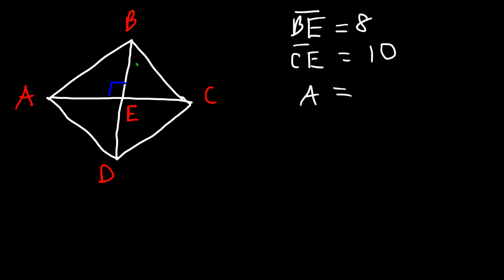How can we calculate the area? You need to know that the diagonals of a rhombus are perpendicular bisectors of each other — they meet at right angles and they bisect each other. So AE and EC are congruent, and BE is congruent to ED. Therefore ED is 8 and AE is 10.